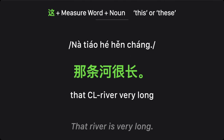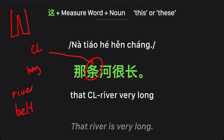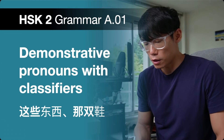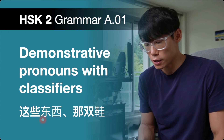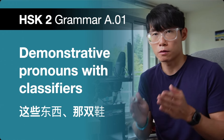Finally, 那条河很长 — 'that river is very long.' 条 is the classifier for things that are long or winding, like rivers. Pants also use 条: 一条裤子 means 'a pair of pants.' A river is long and winding, so we use 那条河. So that is how you use demonstrative pronouns with classifiers — for example, 这些, 那双 + noun — to indicate what you are talking about: 这本书 (this book) or 那双鞋 (those shoes).